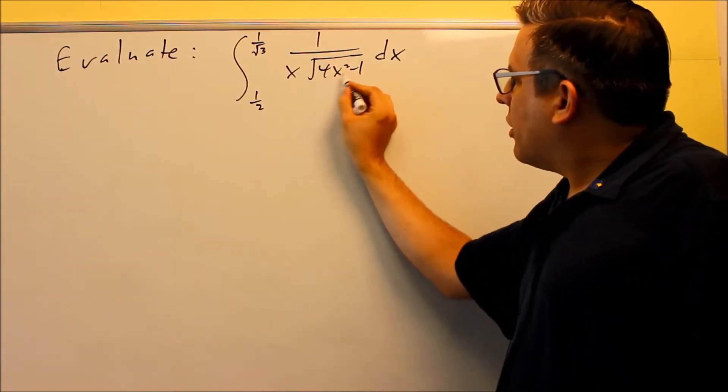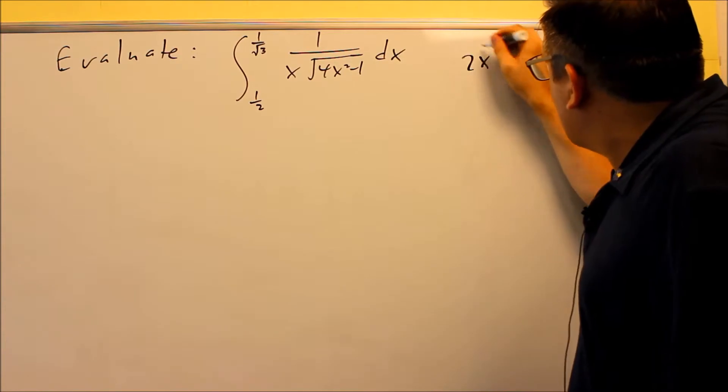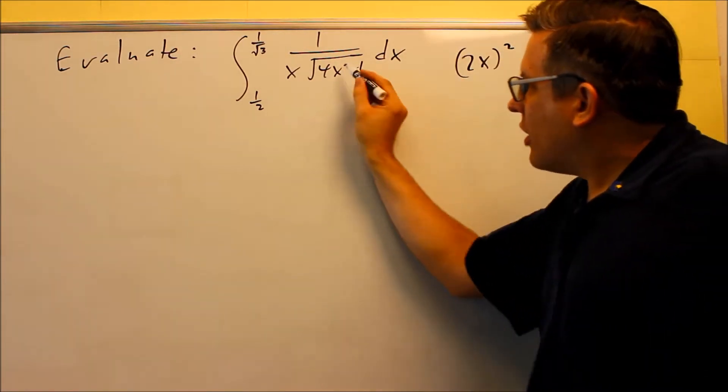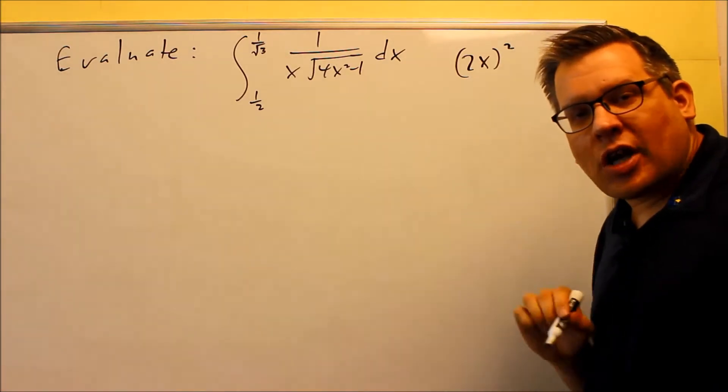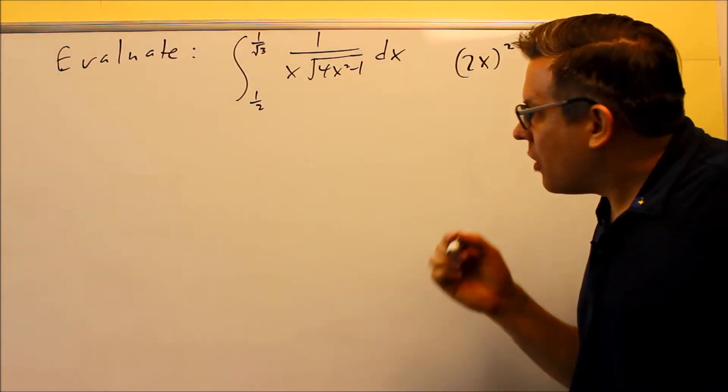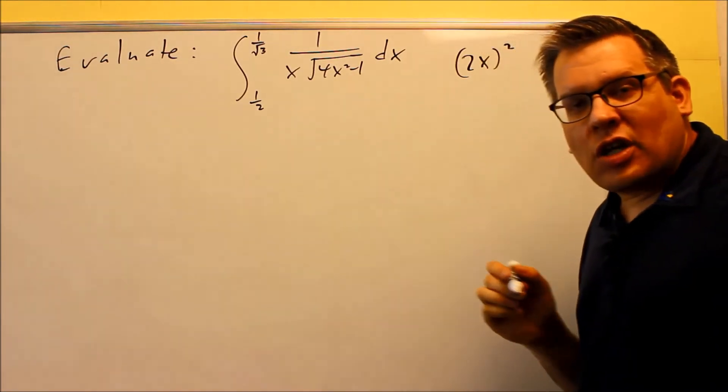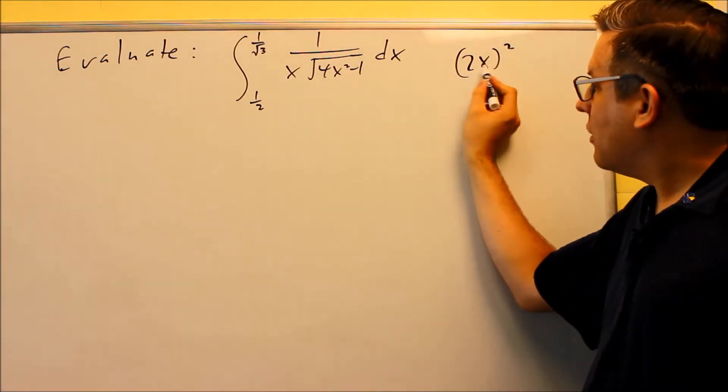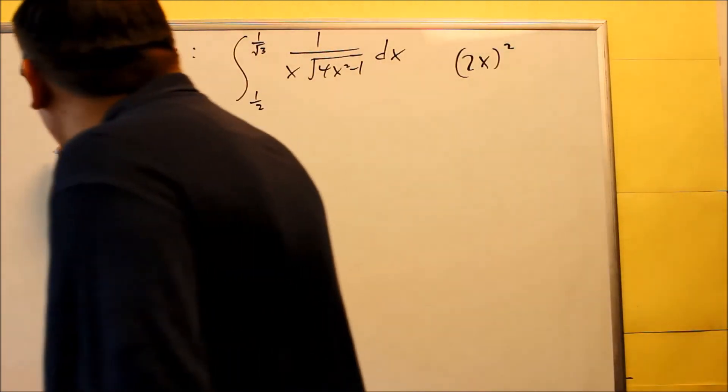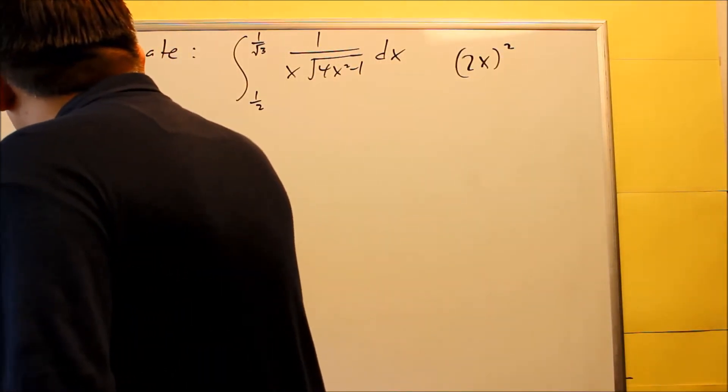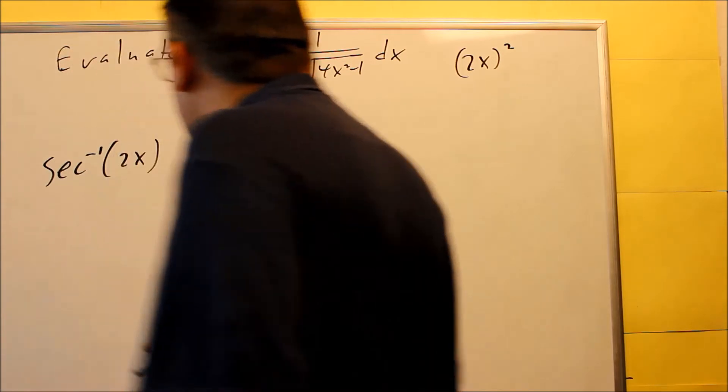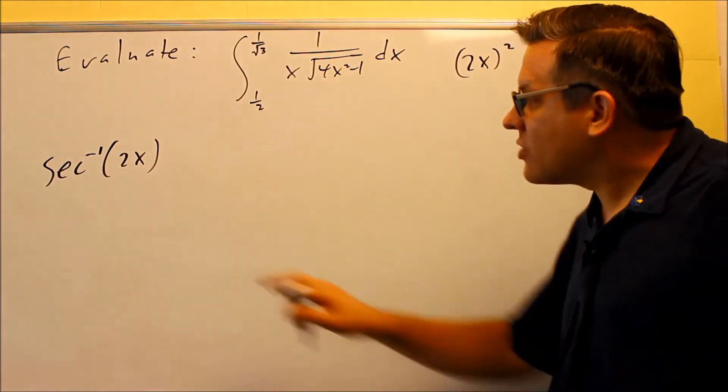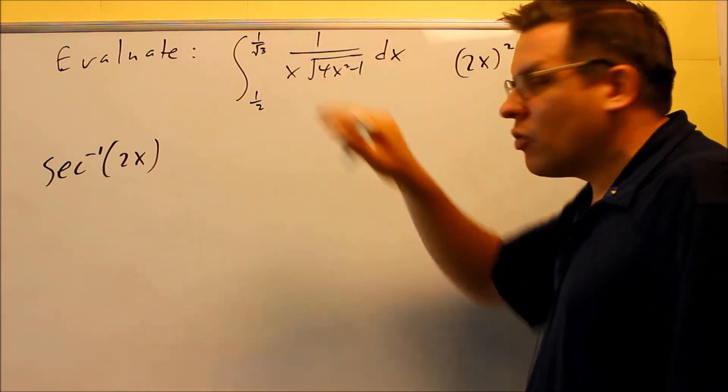Now this right here, 4x squared, that can be written as 2x quantity squared. So because of that, that means that that's going to appear inside your inverse secant. Because remember, when you do inverse secant, it's inverse secant of k times x. The k value here is going to be 2 because that's inside there. So this will turn into inverse secant of 2x. So this whole thing actually gets converted into that one. So that's your complete antiderivative from this whole thing that you see here.